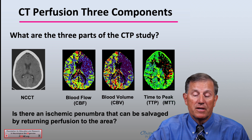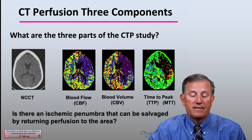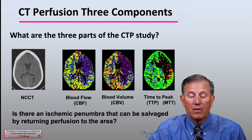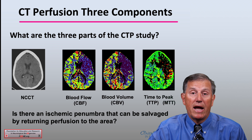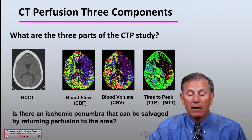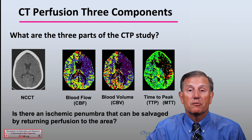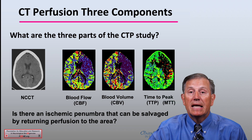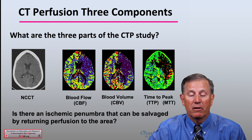What are the three parts of the CTP study? On the left there's a non-contrast study. Then there are studies that include cerebral blood flow (CBF), cerebral blood volume (CBV), and characteristics that talk about the rate at which blood flows through this area — both a time to peak and a mean transit time for blood and contrast to move through the at-risk tissues. The purpose of these three components is to answer the question: is there an ischemic penumbra that can be salvaged by returning perfusion to the area by dissolving or removing the clot in an important vessel?